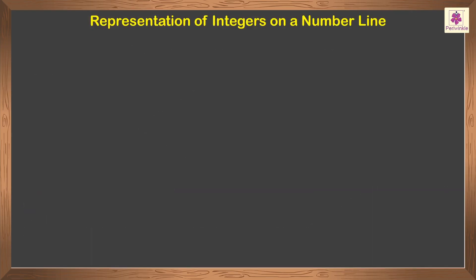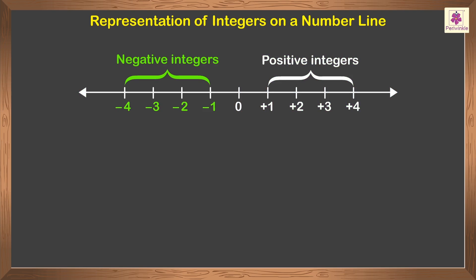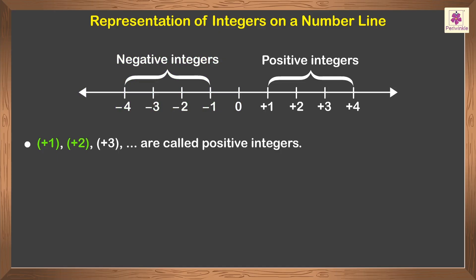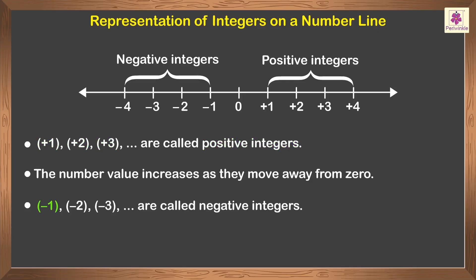Representation of integers on a number line: positive one, positive two, positive three, and so on are called positive integers. The number value increases as they move away from zero.